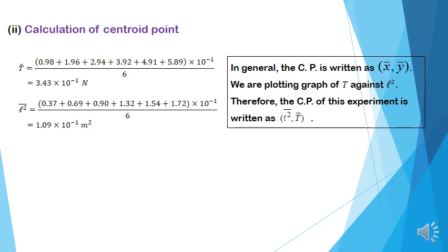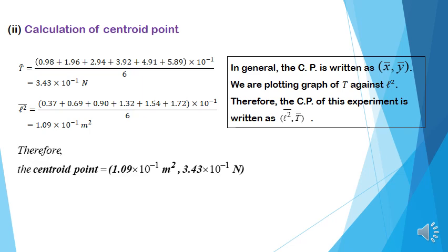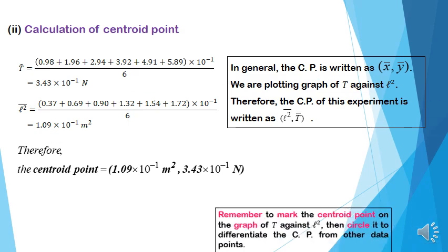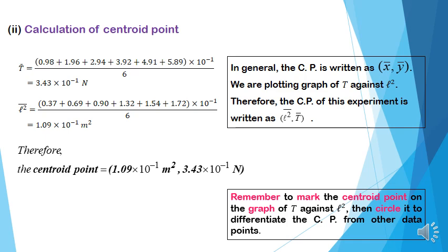The number of decimal places for secondary data calculated are rounded off to consistently two or three decimal places. Roman 2: calculation of centric point. Show the calculation of average T and average L squared. In general, the centric point is written as average x and average y. We are plotting a graph of T against L squared; therefore, the centric point is written as average L squared and average T. The centric point obtained for this experiment is 1.09 × 10⁻¹ m² and 3.43 × 10⁻¹ N. Remember to mark the centric point on the graph of T against L squared, then circle it to differentiate the centric point from other data points.